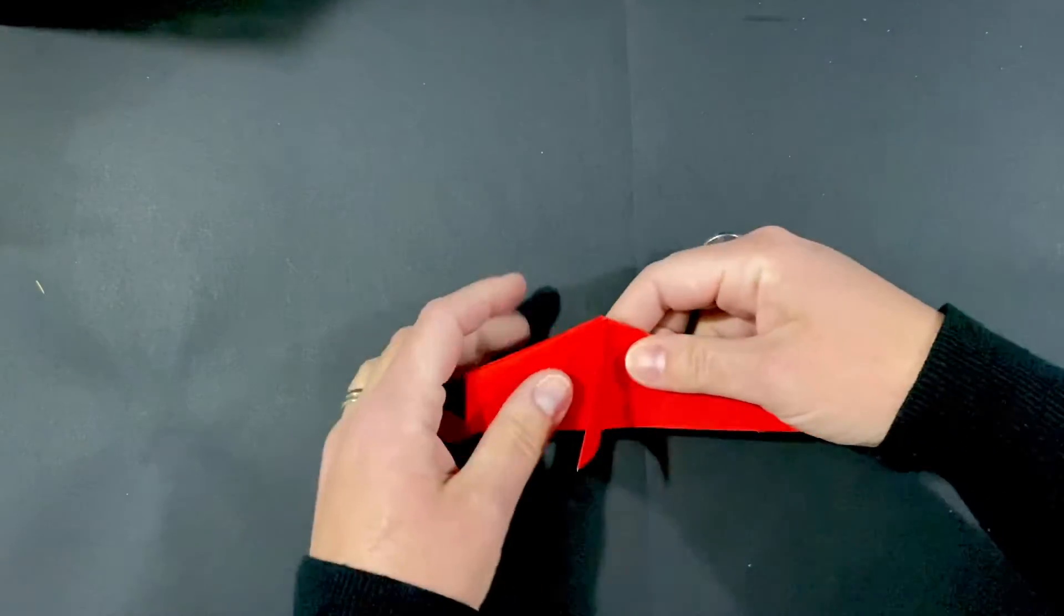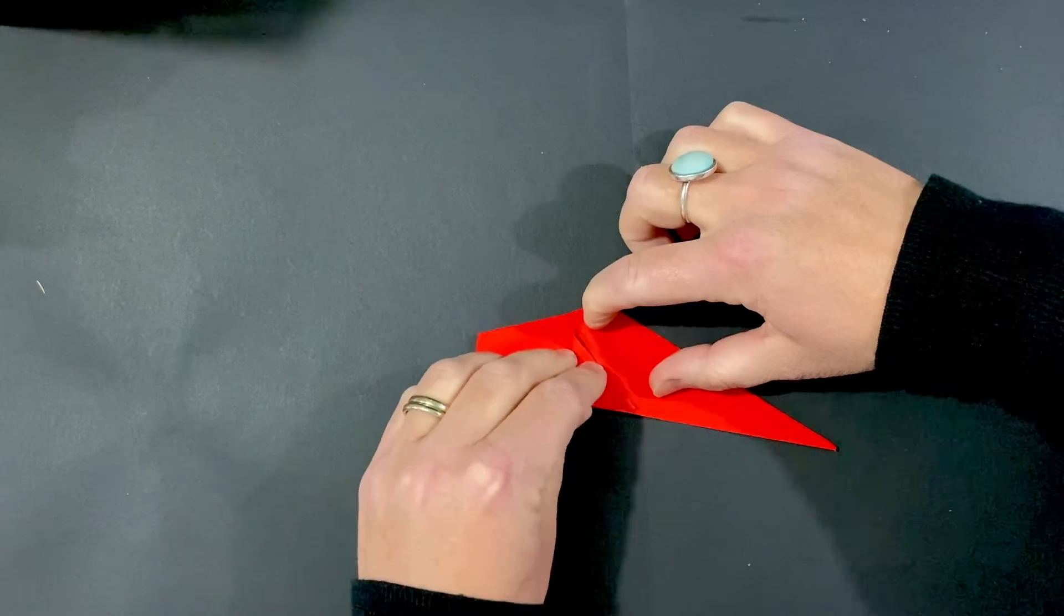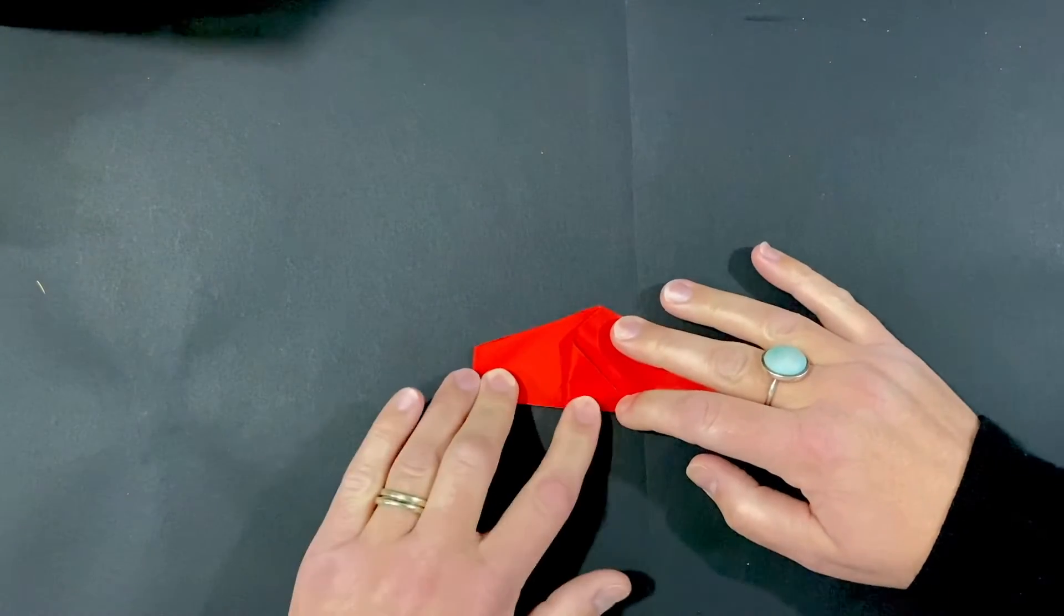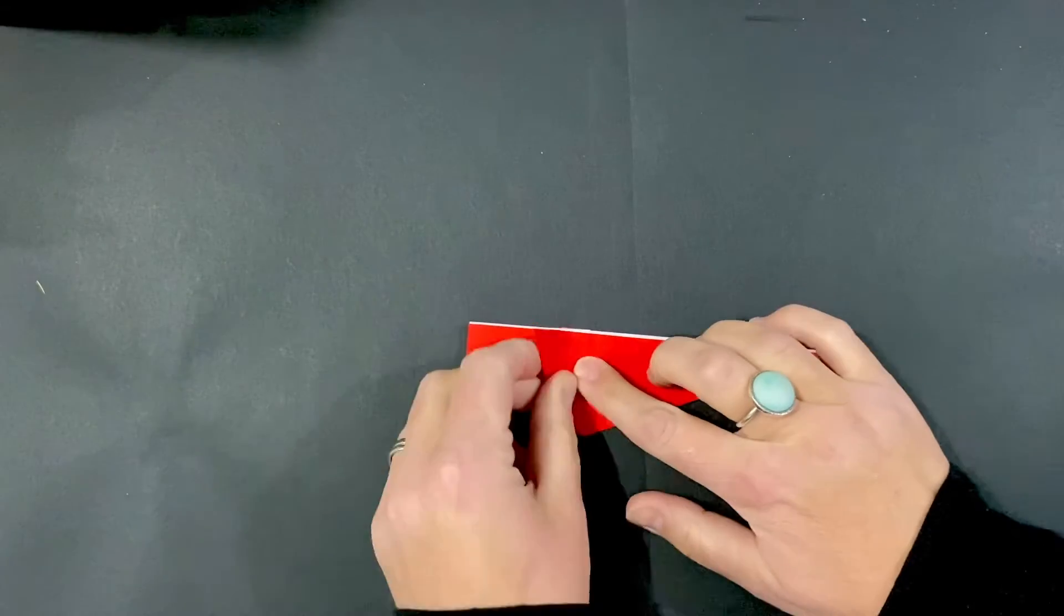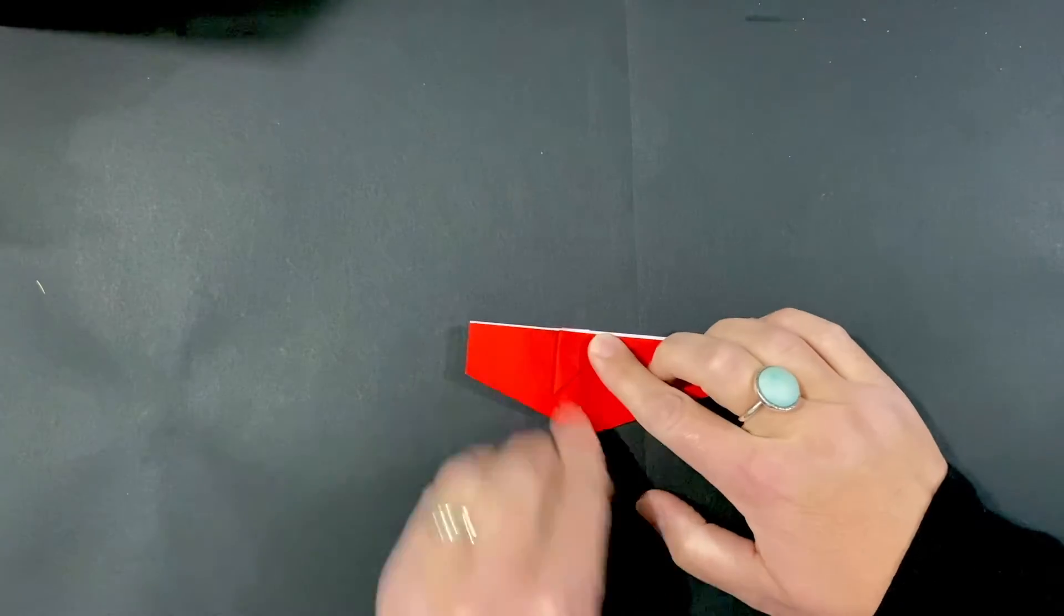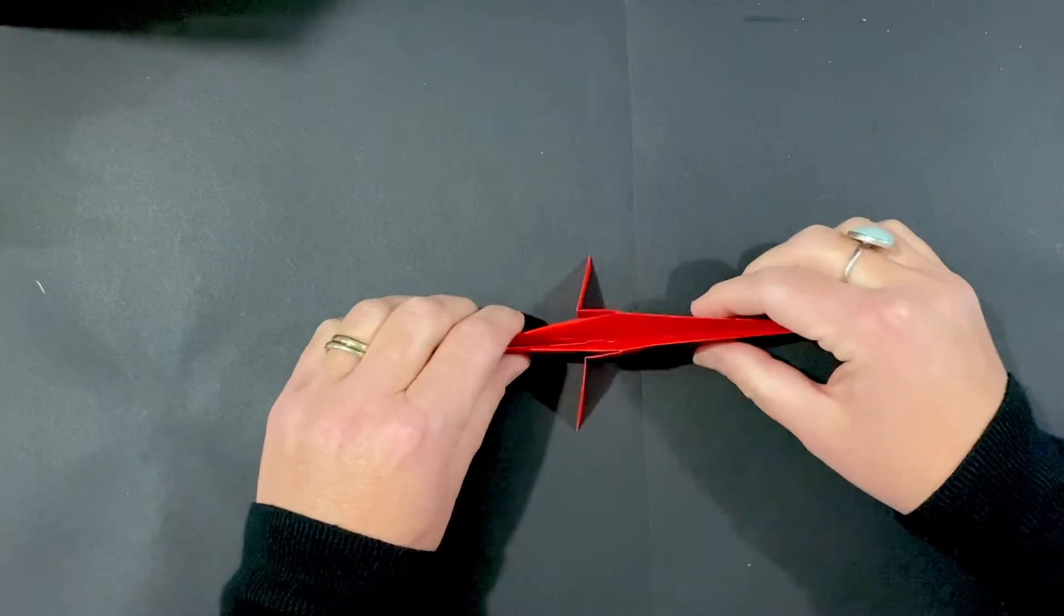So let's make these whale fins a little bit more like fins. We're going to fold it back at a right angle. Flip it over and do the same thing on the other side. So now the fins come out like that.